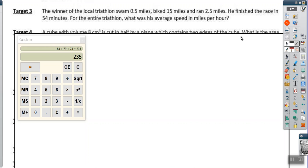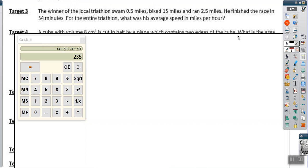The winner of a local triathlon swam a half mile, biked 15 miles, and ran 2.5 miles. If you finish the race in 54 minutes for the entire triathlon, what is its average speed? We know that rate times time is equal to distance. So we're looking for this average rate. We need to know the distance and we already know the time of 54 minutes.